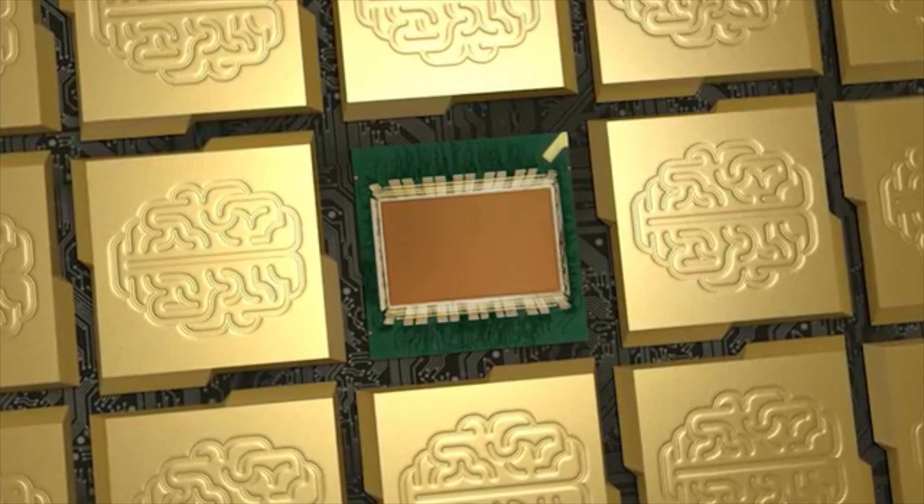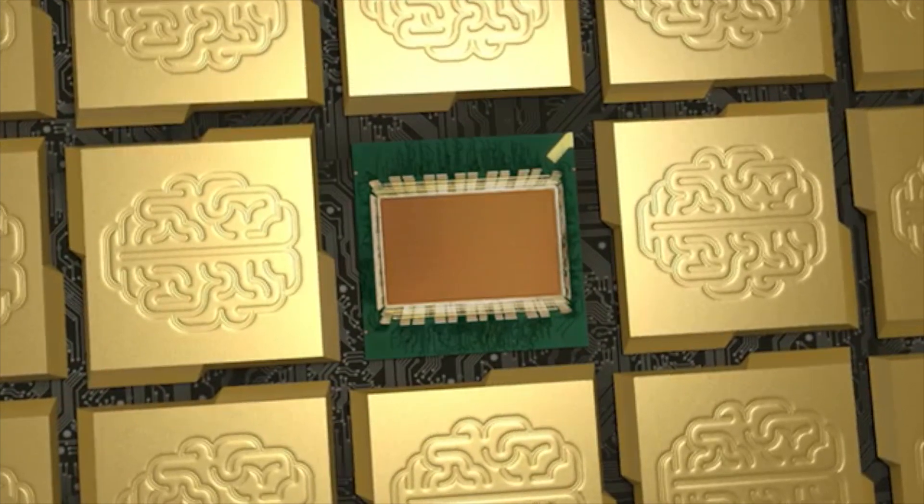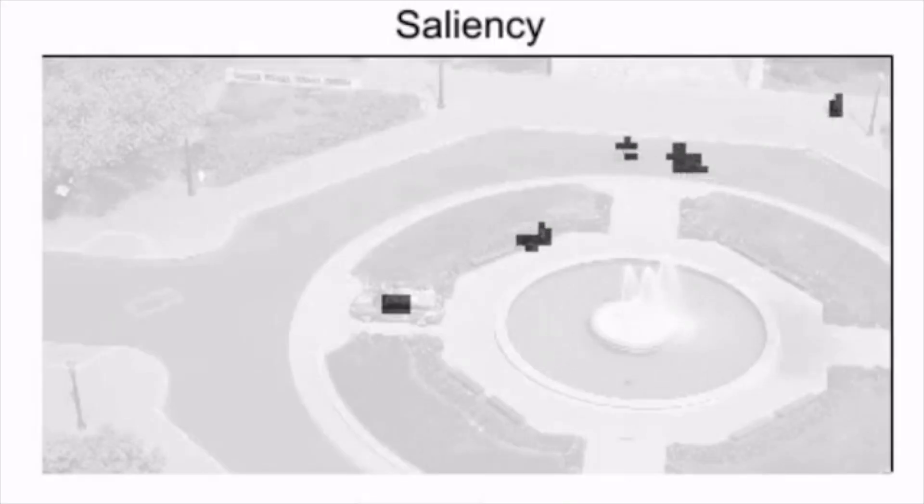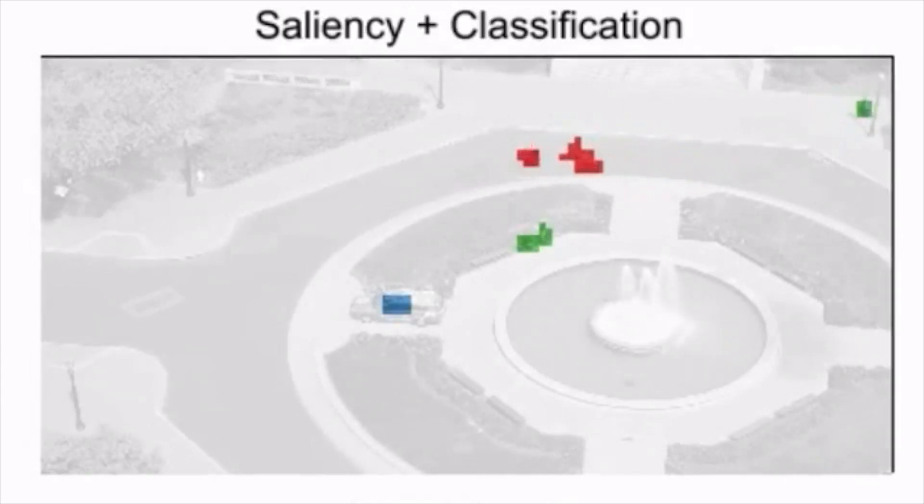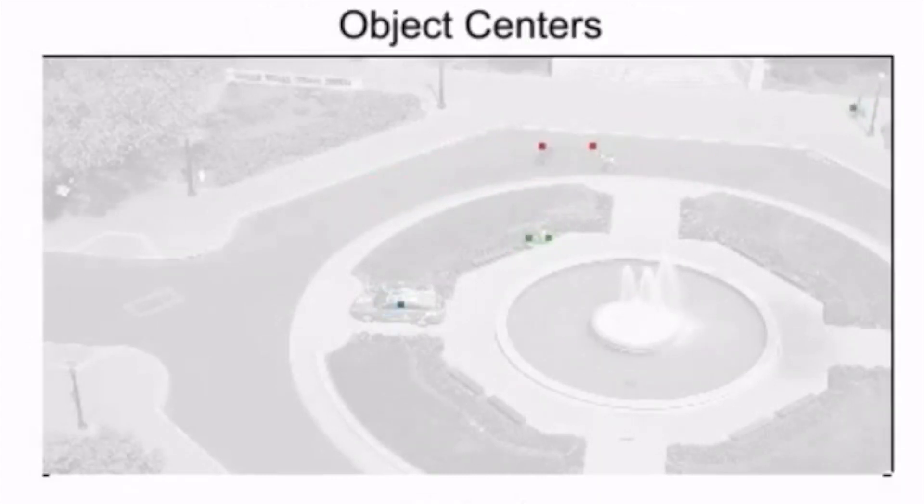Our new chip is at the scale of a bee brain. What you see here is a camera mounted on top of a clock tower at Stanford University, where people, cars, bicyclists, and trucks are passing.